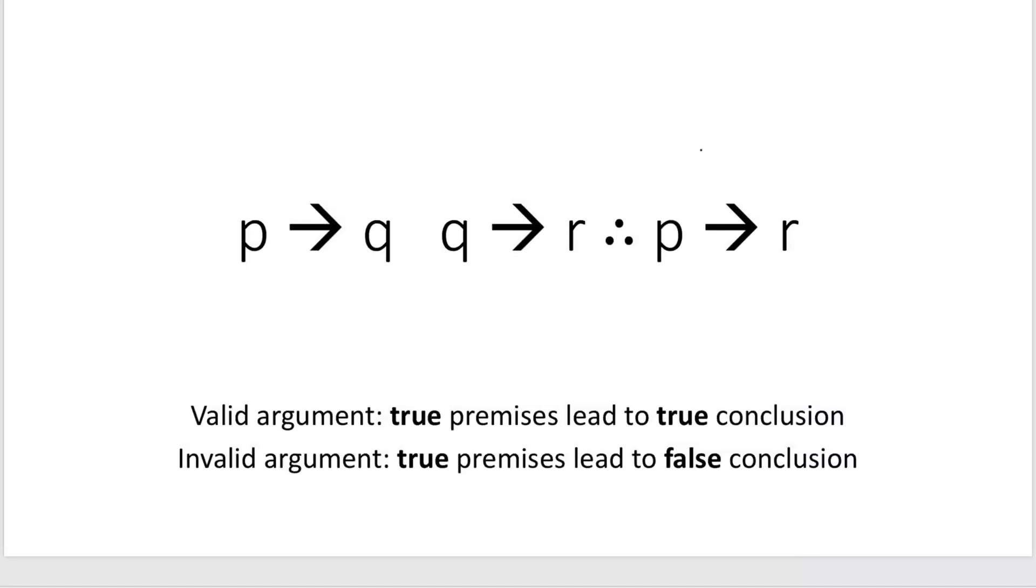We're going to use a shorter truth table to prove the validity of a propositional argument. Since an argument is considered invalid whenever the premises are true and the conclusion is false, to prove validity with a shorter truth table we start by assuming the argument to be invalid.